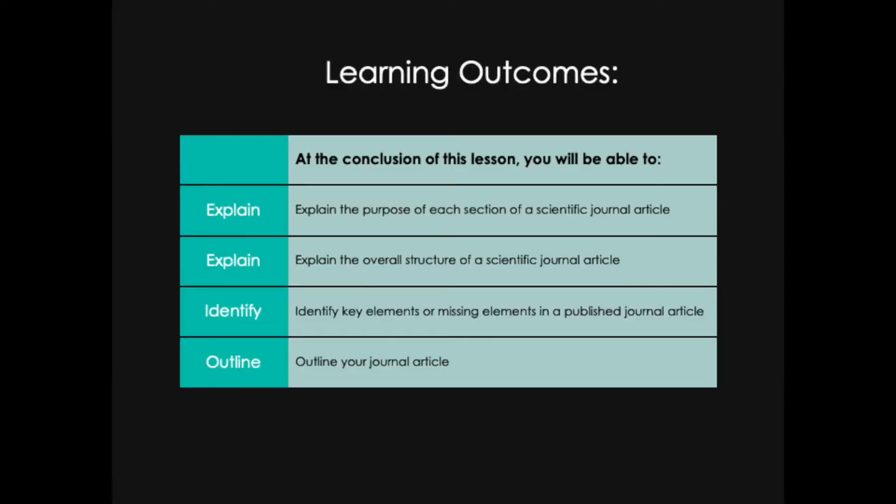The learning outcomes for this lesson are as follows. At the conclusion of the lesson you should be able to explain the purpose of each section of a scientific journal article. You should be able to explain the overall structure of a scientific journal article. You should be able to identify key elements or notice and identify when there are missing elements or obscured elements in a published journal article. And finally you should be able to outline your journal article.